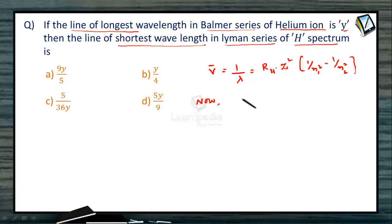Now, for Balmer series, we know N1 is equal to 2 and line of longest wavelength, that is N2 is 3. So this is what we need to know.